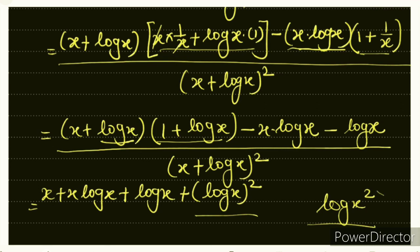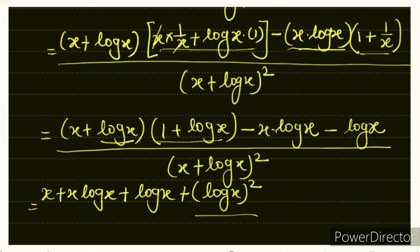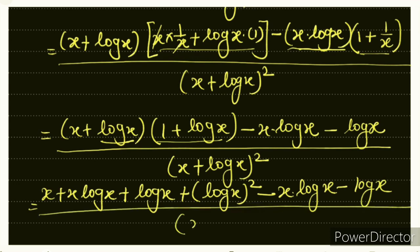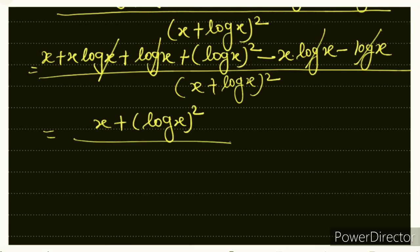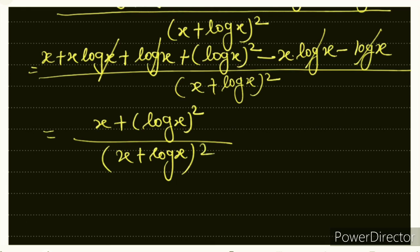So dy/dx = [x + (log x)²] / (x + log x)². We cannot simplify further. I hope this sum was solved correctly.